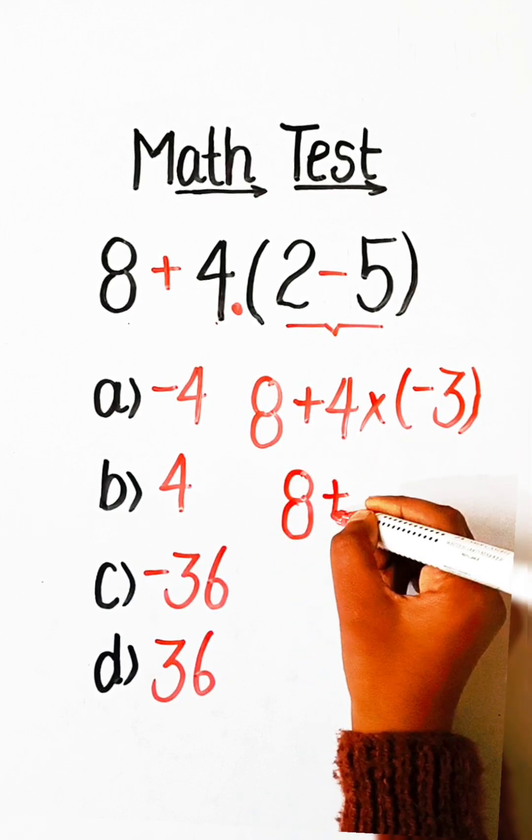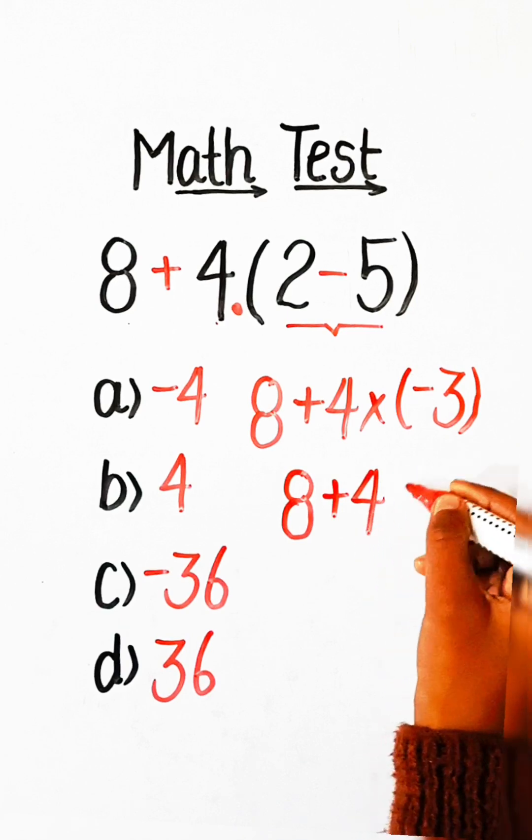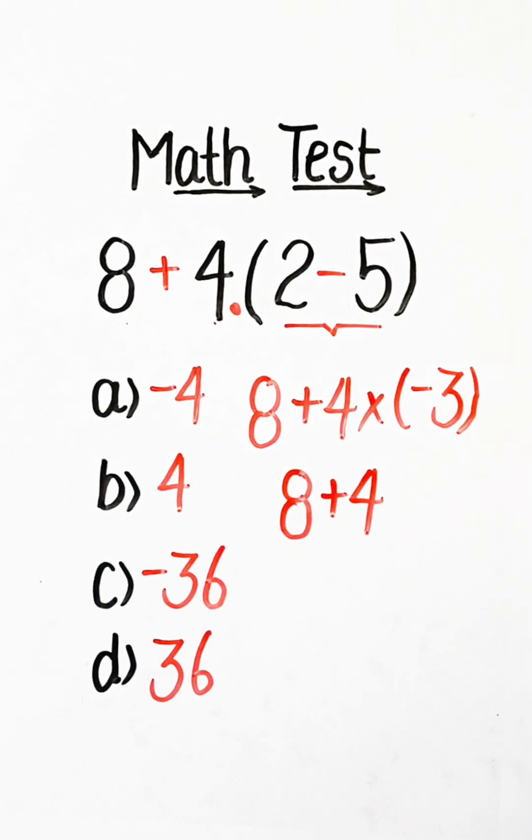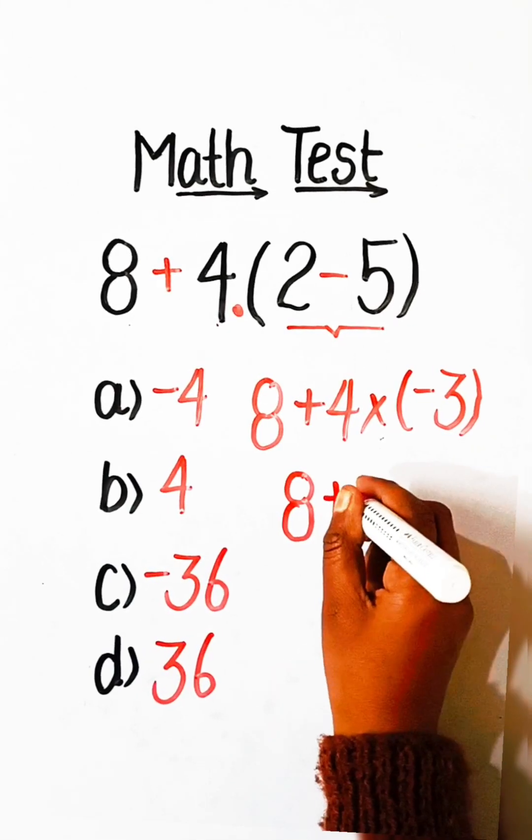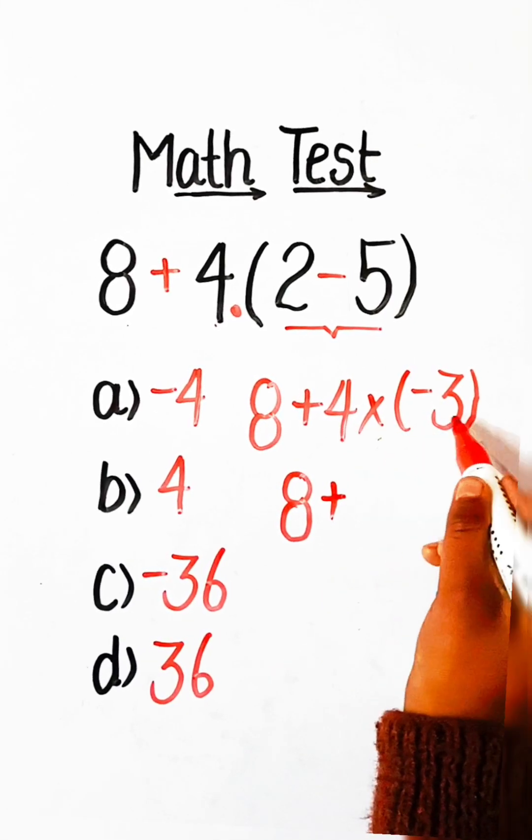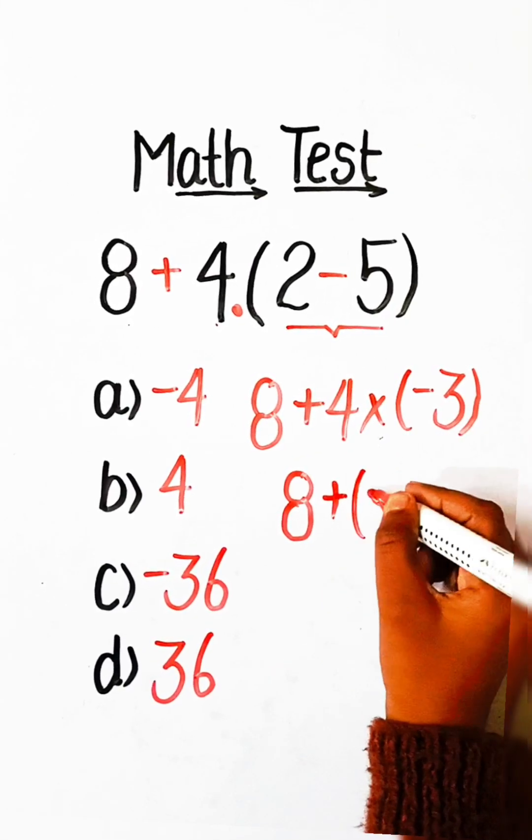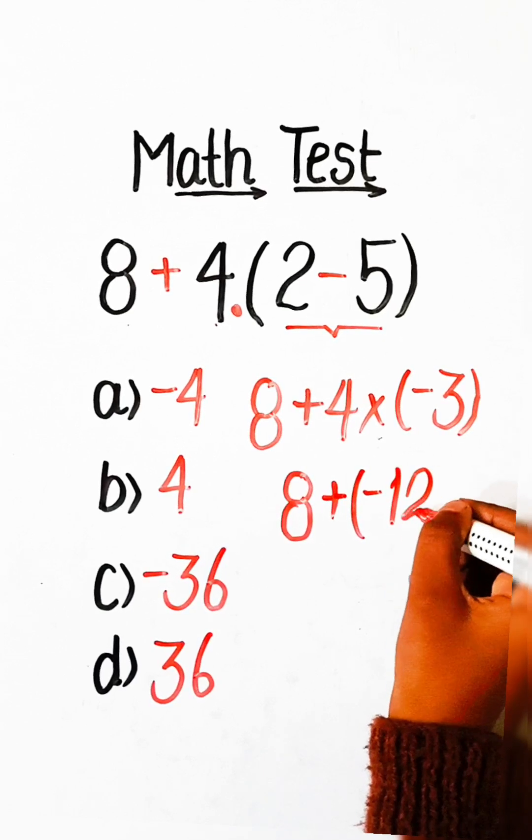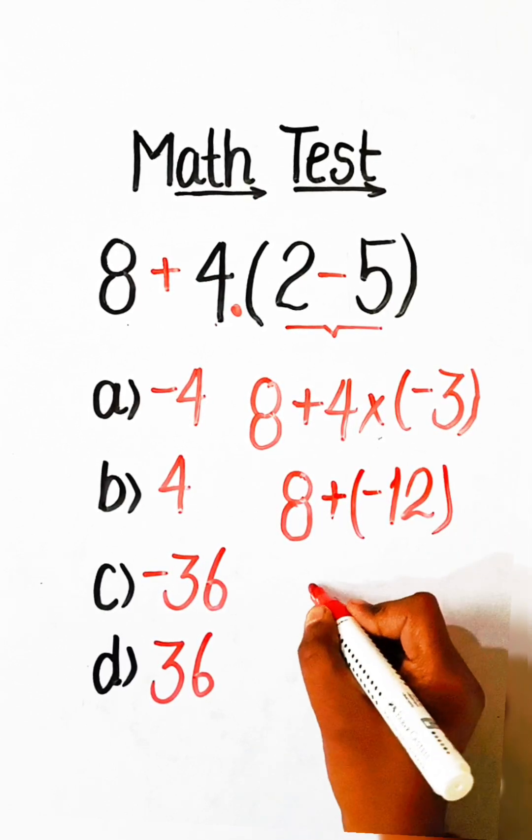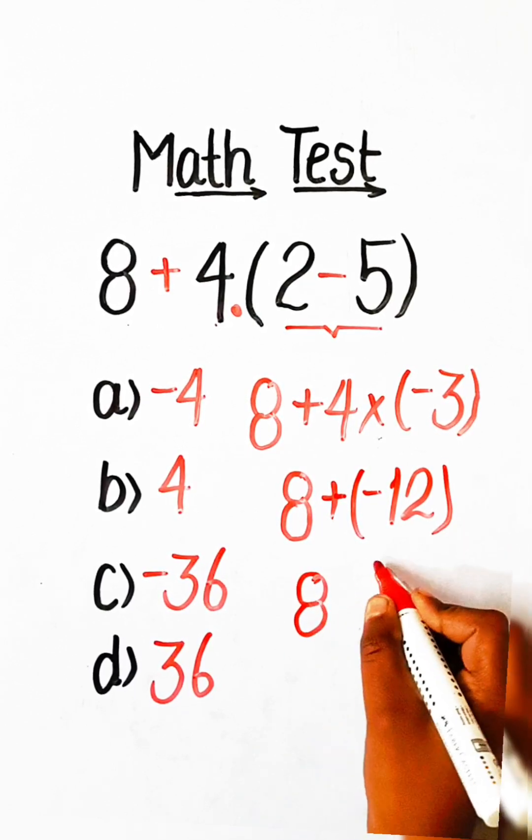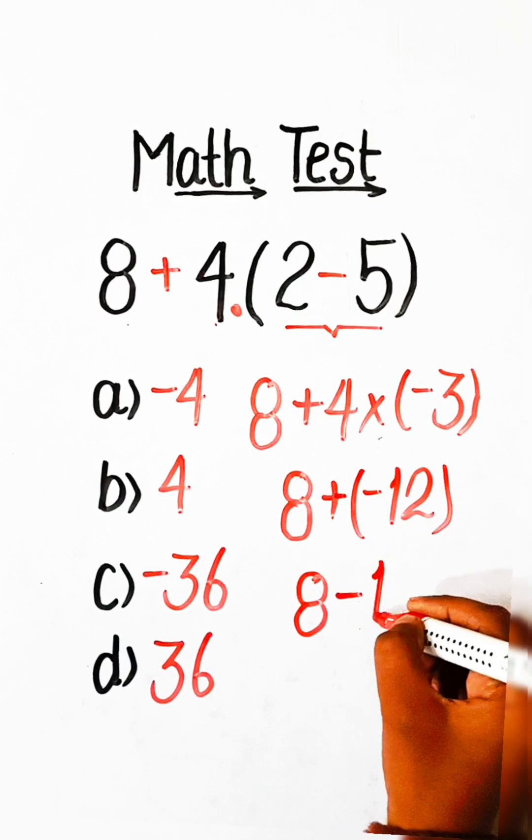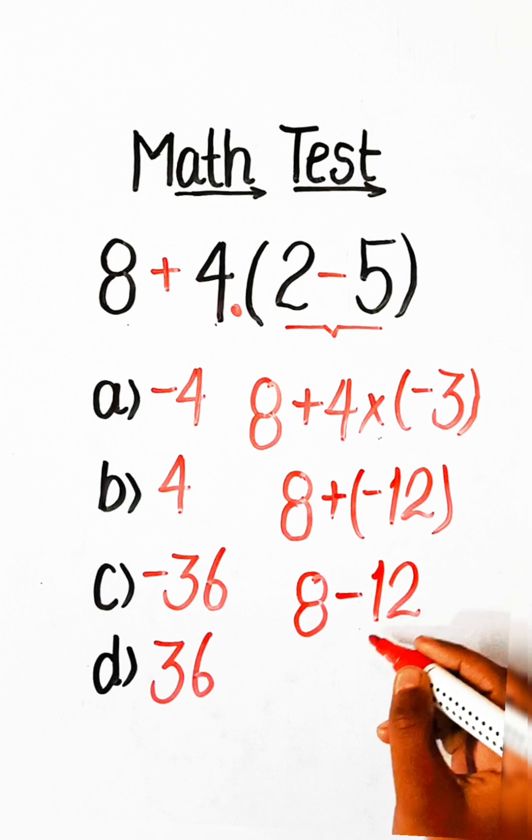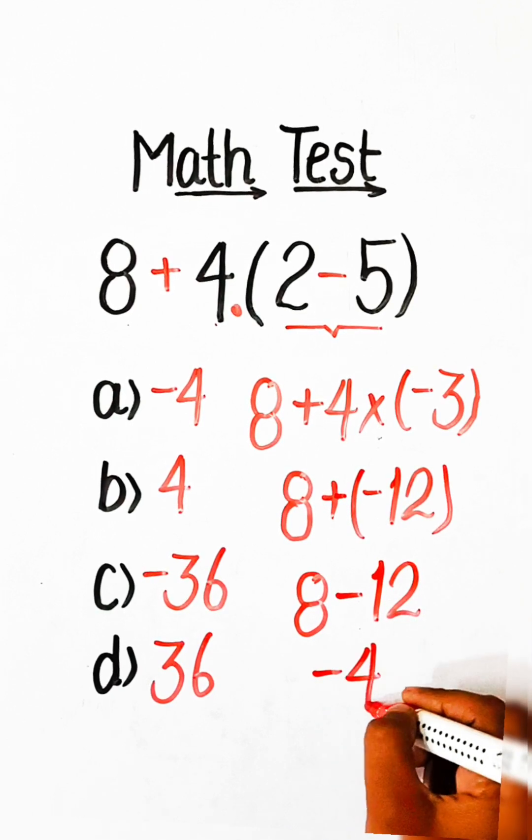8 plus 4 multiply by minus 3 is minus 12. 8 plus minus... 8 minus 12 is minus 4.